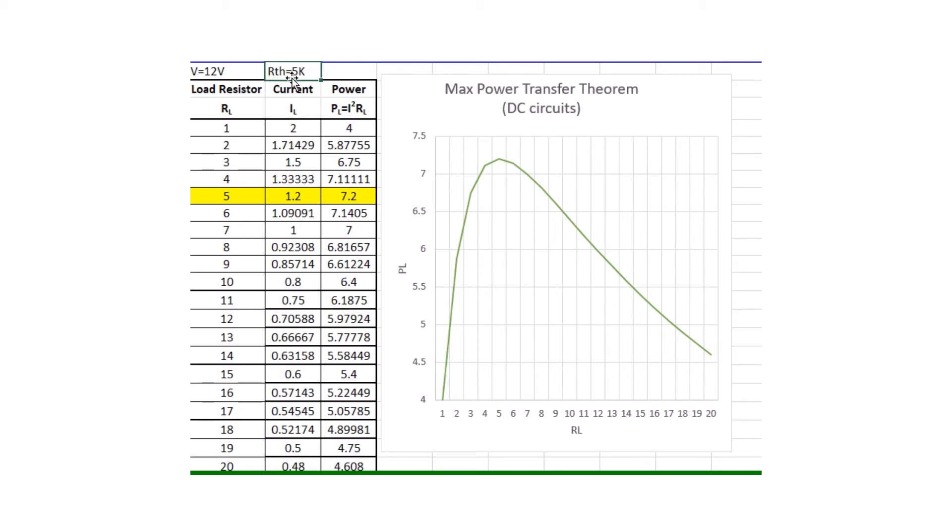We have Z thevenin instead of R thevenin and ZL instead of RL. We have also studied that when ZL is set equal to the complex conjugate of Z thevenin, we get maximum power in the load.